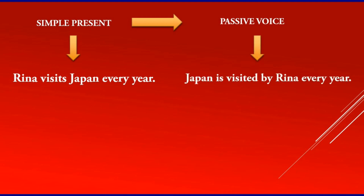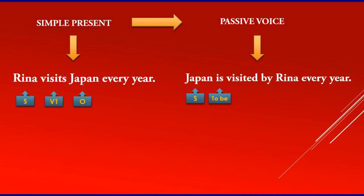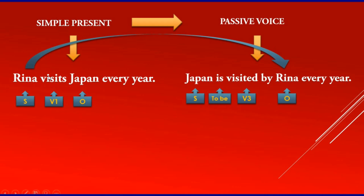For example, 'Rina visits Japan every year.' In passive: 'Japan is visited by Rina every year.' Did you see the difference? Rina is the subject in the first sentence, visit is verb 1, Japan is the object, and every year tells the time. In passive, Japan becomes the subject, followed by 'is visited' — that's to-be plus verb 3 — and Rina becomes the object. So remember the position!